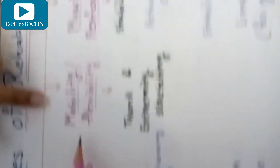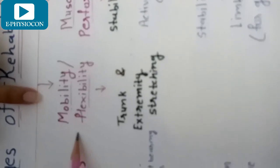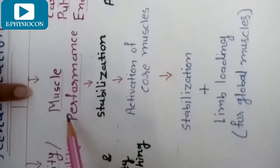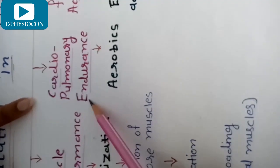Let's start my topic. I will give some basic guidelines for the rehabilitation stages in LBP. There are five stages: first is kinesthetic awareness, second is mobility or flexibility, third is muscle performance, fourth is cardiopulmonary endurance, and fifth is functional activity.